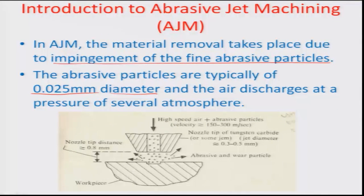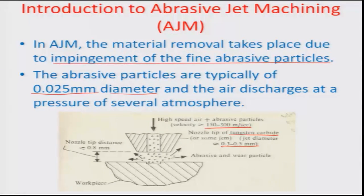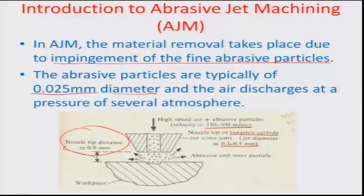The jet speed of the air is about 150 to 300 meters per second. The tip is made of a hard and tough material such as tungsten carbide or sapphire, so there is no abrasion. The jet diameter is typically about 0.3 to 0.5 millimeters — that is 300 to 500 microns. There is an important parameter called nozzle tip distance: how far the nozzle is from the surface being machined, which has an optimized value for maximum MRR.